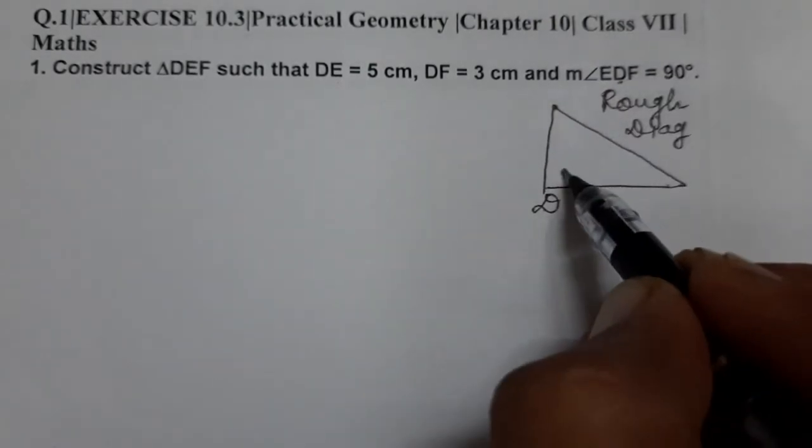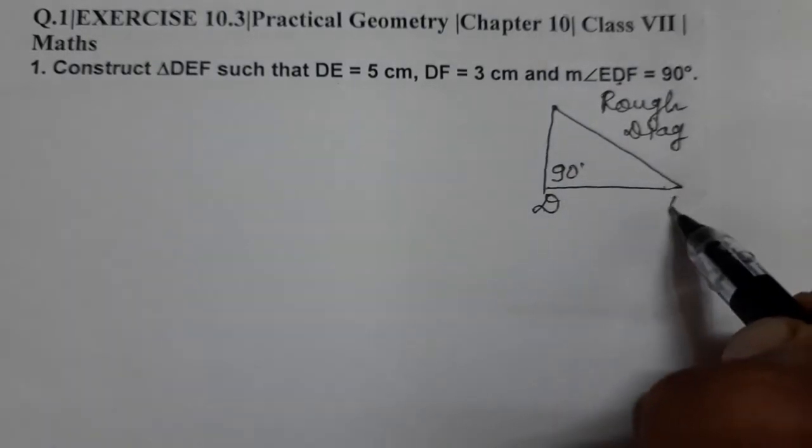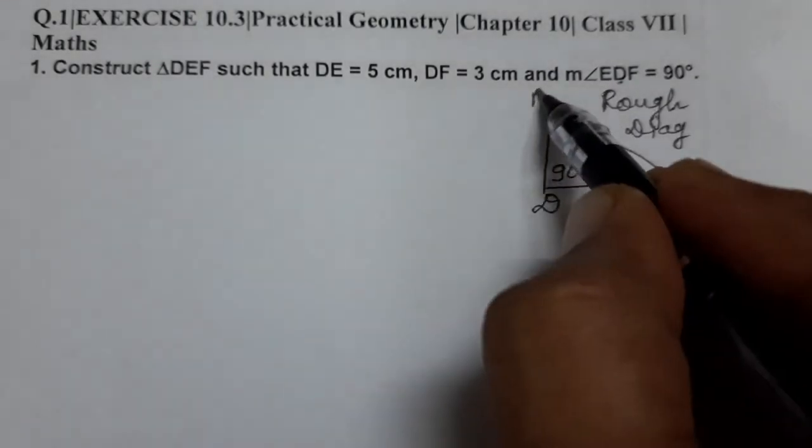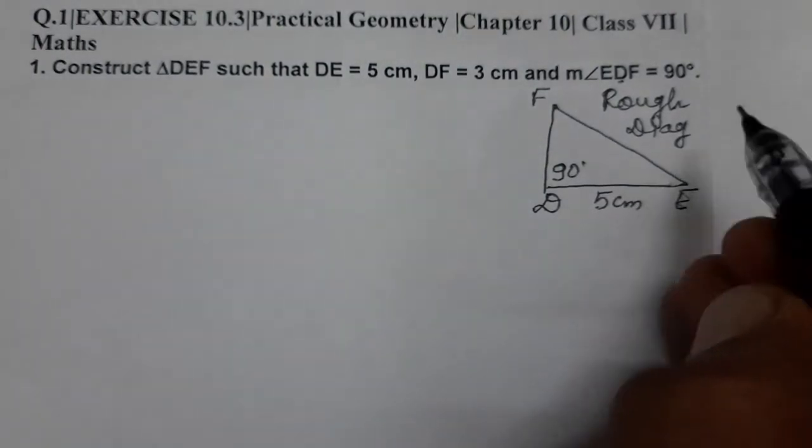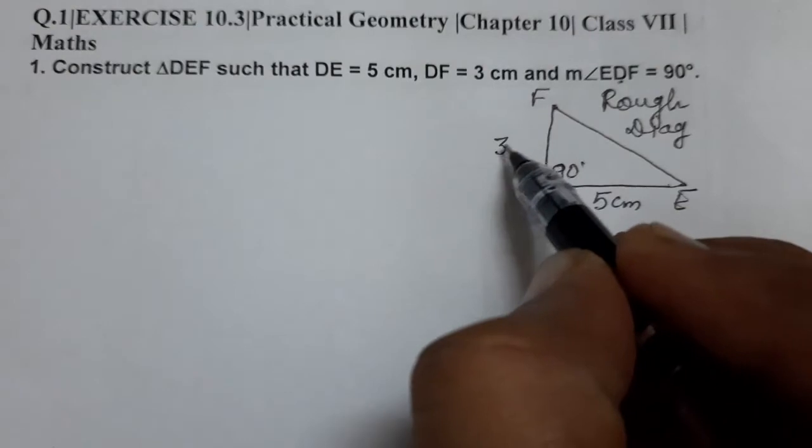So this is 90 degrees. Now we can give names D, E, and this is F. Now what is given? DE is 5 cm, so DE here is 5 cm, and DF is given to us as 3 centimeters.